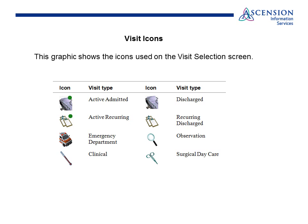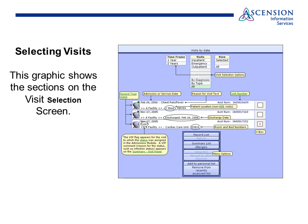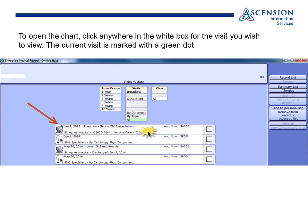There are many types of visits you will see displayed when viewing the EMR. These icons are a way of telling what type of visit it might be. A hospital bed with a green dot is the active admitted patient visit. A clipboard with a green dot is an active recurring visit. To open the chart, click anywhere inside the white box for the visit you wish to view. The current visit is marked with a green dot.